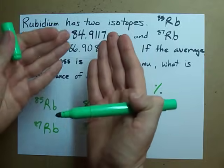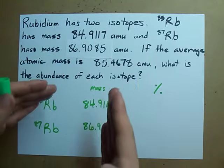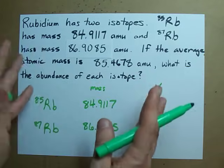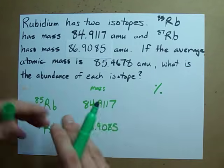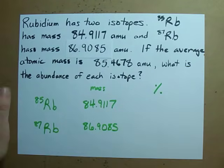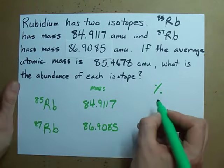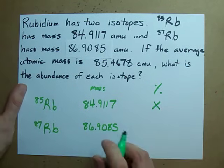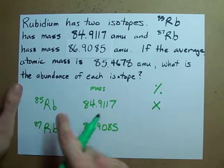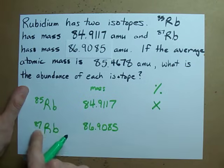By definition, the isotopic or the average atomic mass is the mass over all or 100% of all the isotopes that occur in nature. So we're going to say that RB85 has an isotopic abundance of X. What's the isotopic abundance of this then?